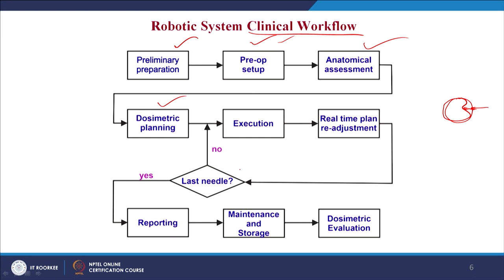This process is repeated for all needles. If it is not the last needle, the system goes back to execution and real-time readjustment. Once the last needle is done, the reporting part comes into picture, where a report is prepared as per the American Association of Physicists in Medicine Task Group and produced for final approval. This report is maintained and stored for the dosimetric final evaluation. This completes the overall clinical workflow of robot assisted prostate brachytherapy minimal invasive surgical procedure.